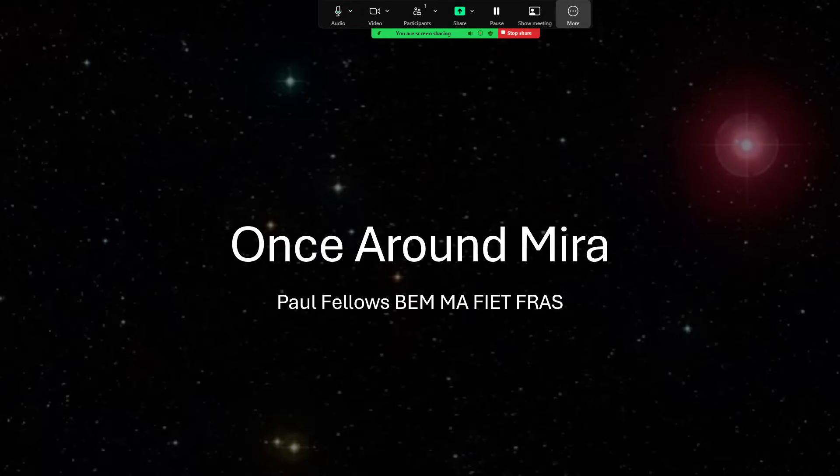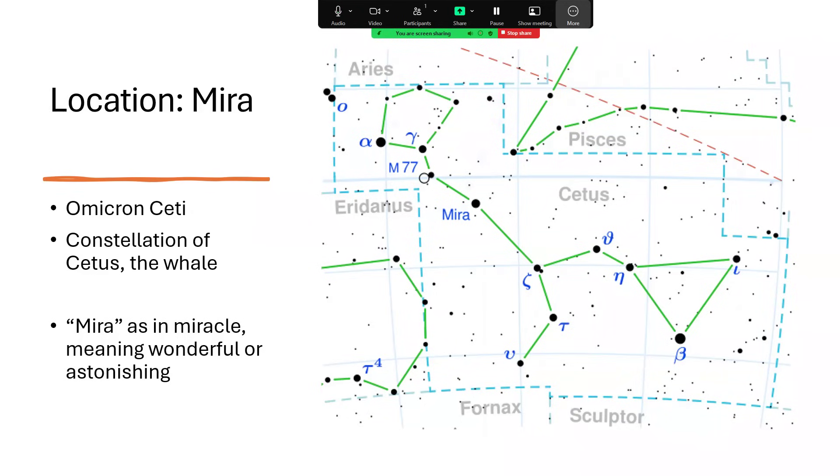Once around Mira. Mira, Omicron Ceti, is in the constellation of the whale, and not a particularly bright star at its best. But it is a variable, and it's been known since antiquity to have this very weird behavior, hence the name Mira, as in miracle, meaning wonderful or astonishing.